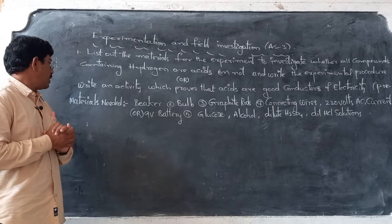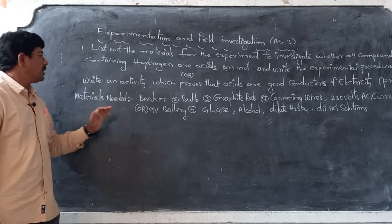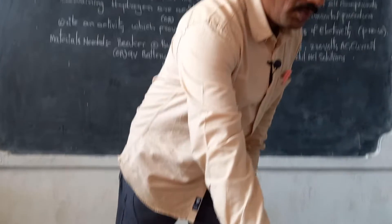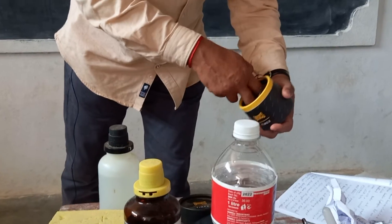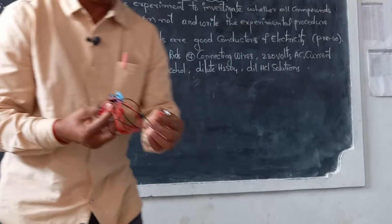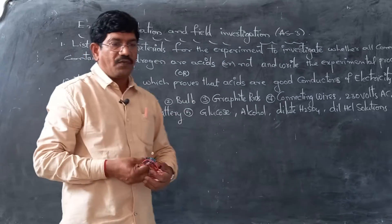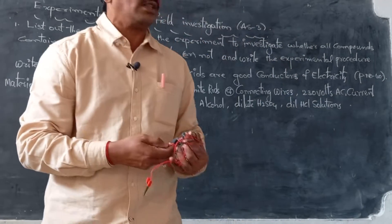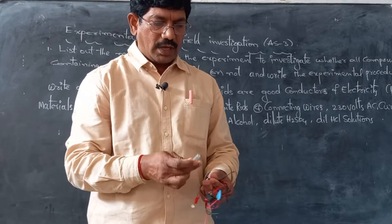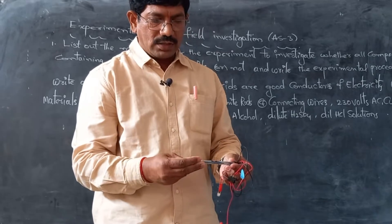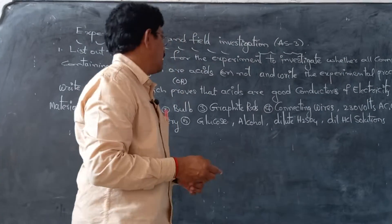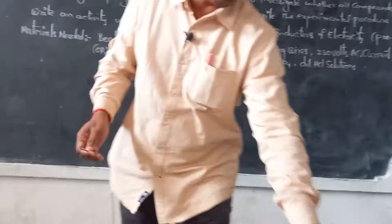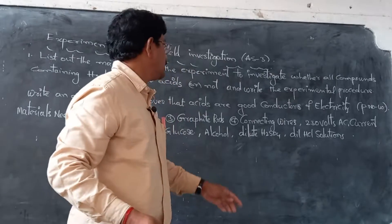To do this activity, the main materials needed are: a 100 ml beaker, a bulb — I have connected the bulb here — and graphite rods. What do you mean by graphite rods? Pencil leads are nothing but graphite rods. Next, connecting wires — I have already connected these.